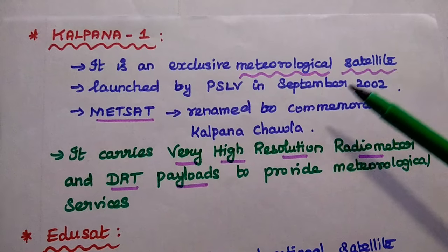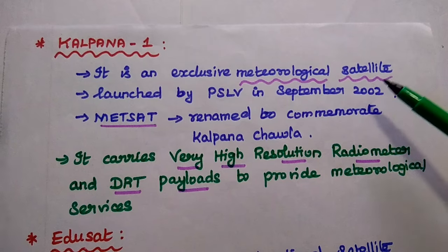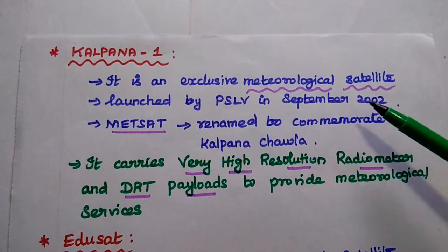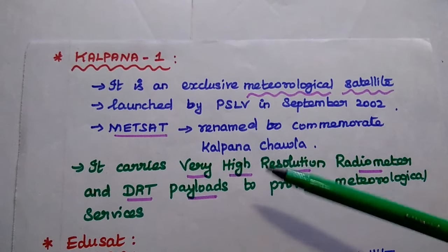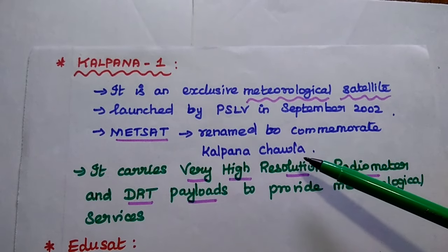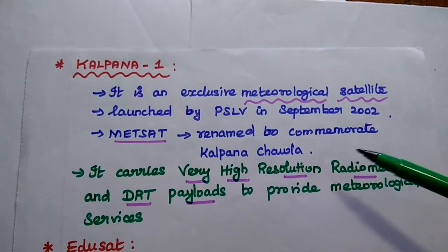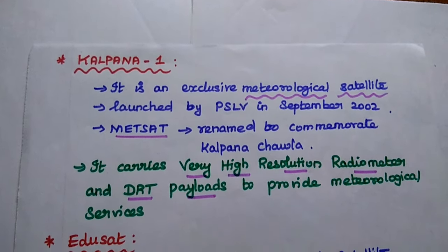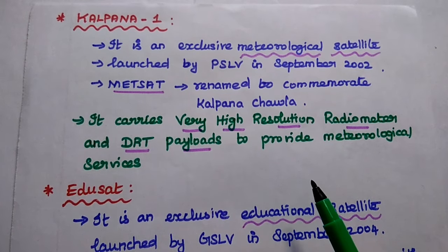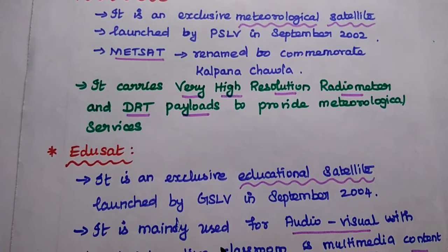Kalpana-1 is an exclusive meteorological satellite launched by PSLV in September 2002. It is mainly used for meteorological services. Initially it was named METSAT — Meteorology Satellite — but it was later renamed to commemorate Kalpana Chawla, the first woman of Indian origin to go to space. It carries a very high-resolution radiometer and DRT payloads to provide high-resolution meteorological services.